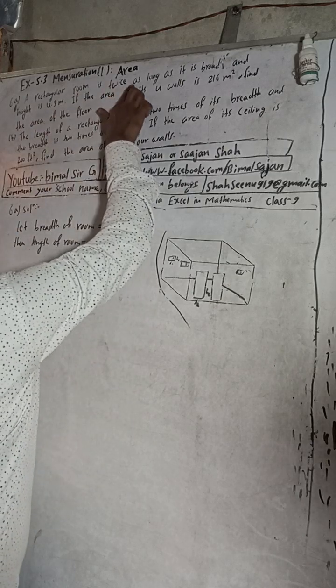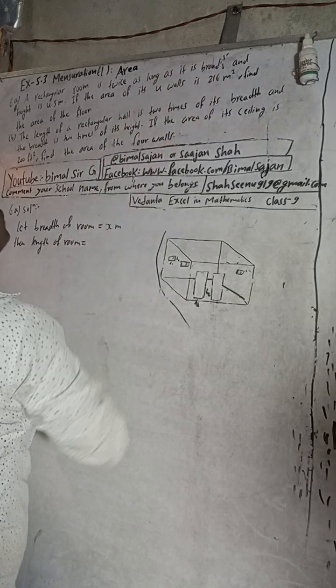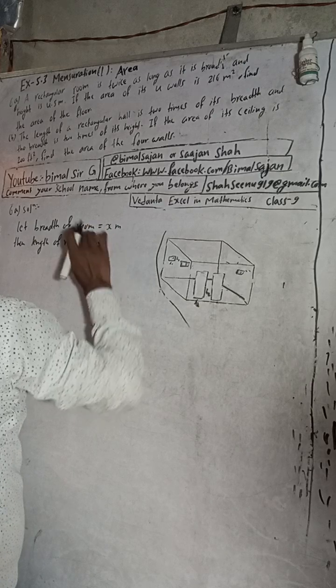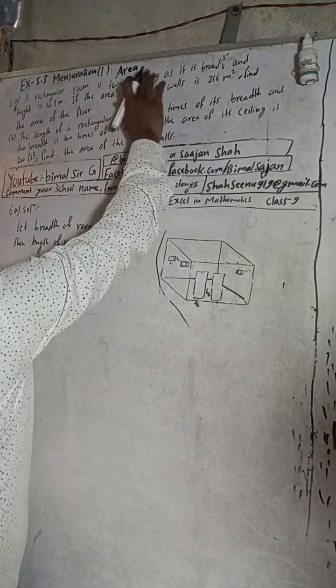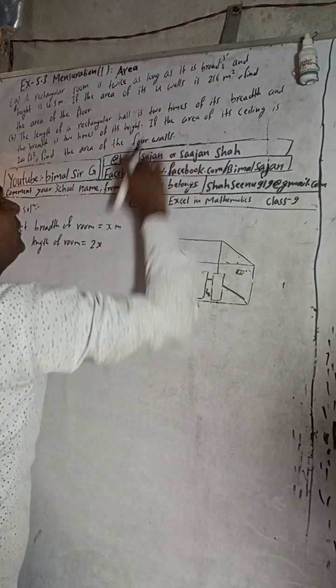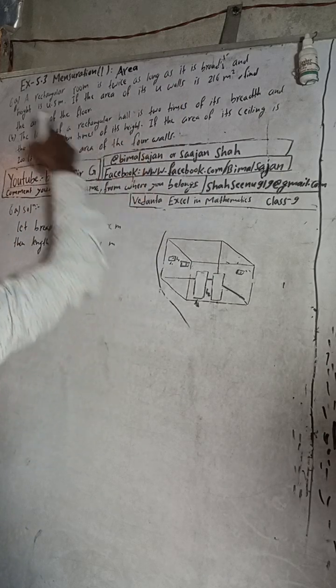The length of the room will be how much? The room is twice as long, so the length is double the breadth. Therefore, length is 2x meters, and the height is given.